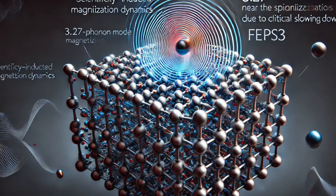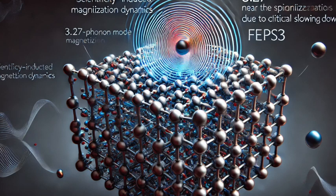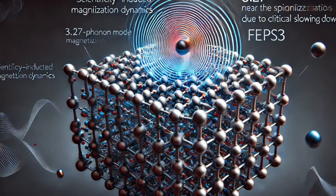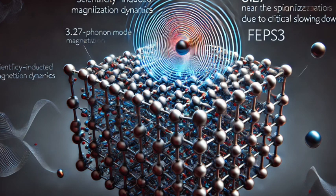But before we get too far ahead of ourselves, let's go back to these phonons. We've talked about them as vibrations, but what are they really? Well, you can think of them as these tiny packets of energy that travel through the material's lattice structure, the way the atoms are arranged. They're not actual particles like electrons, but they behave like them in many ways.